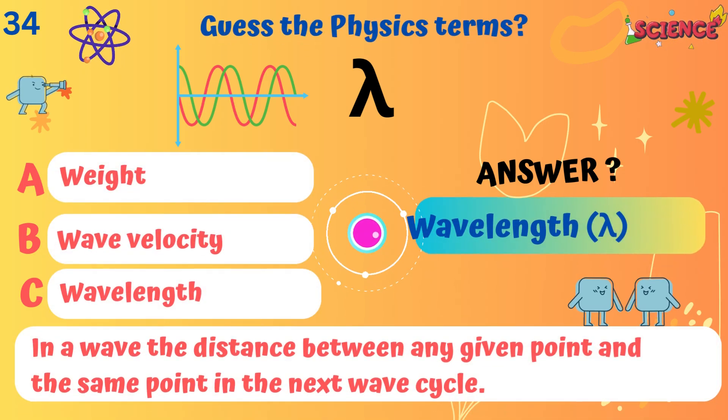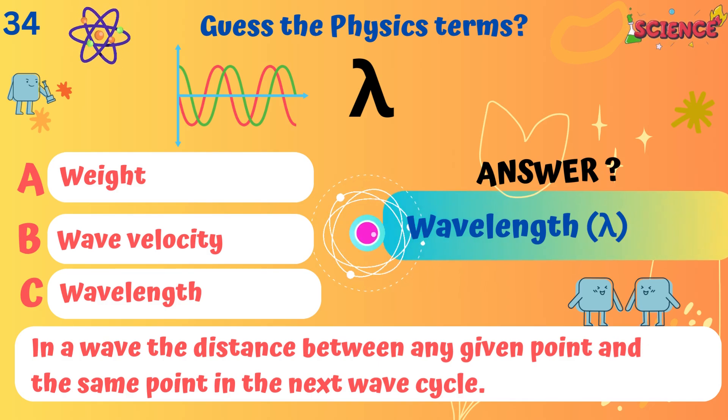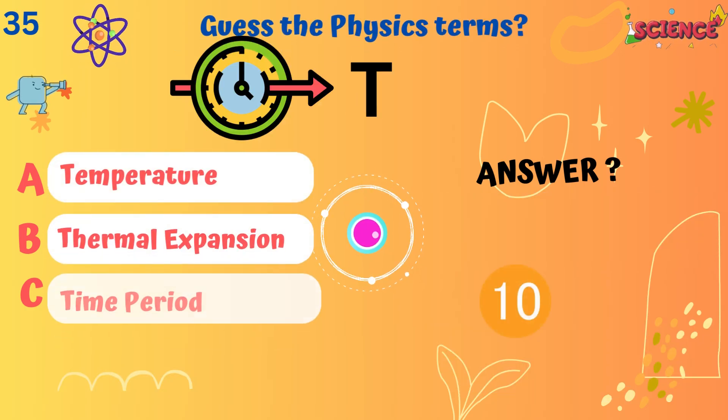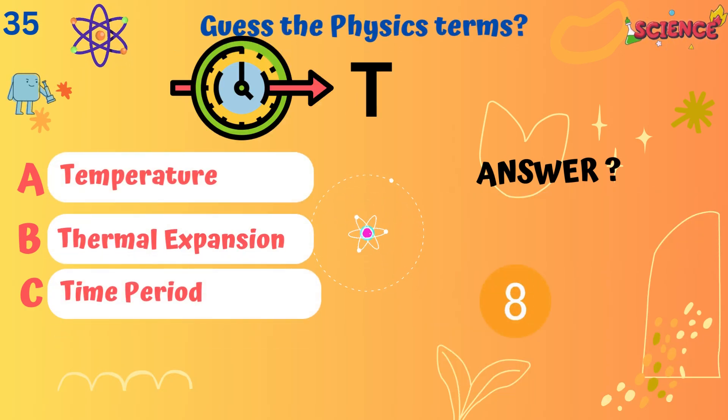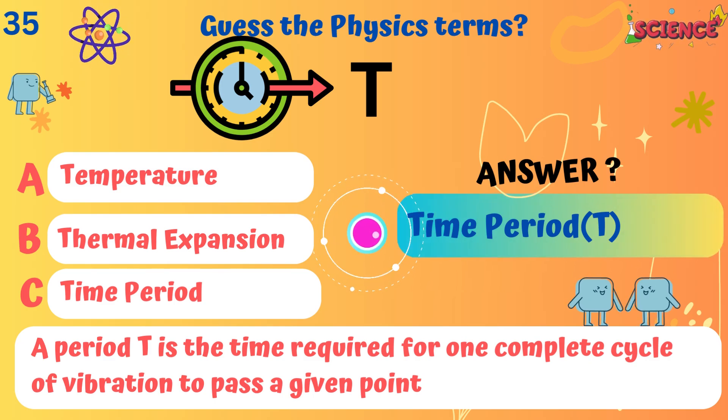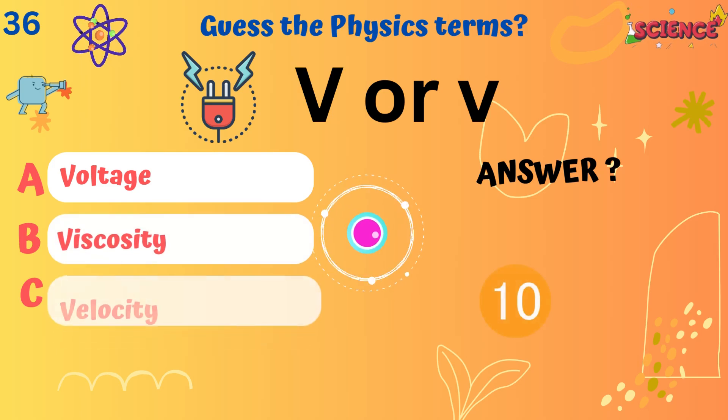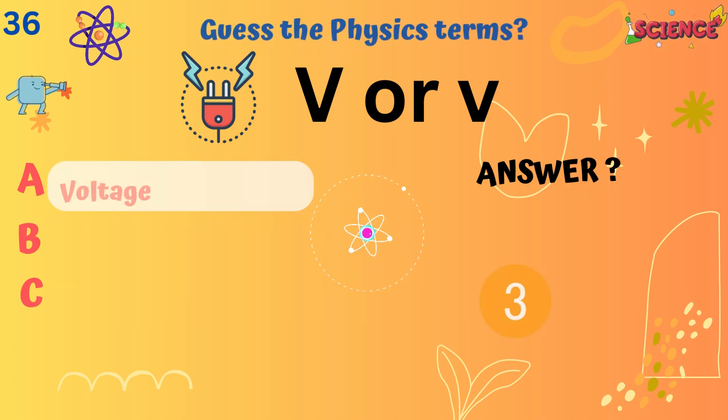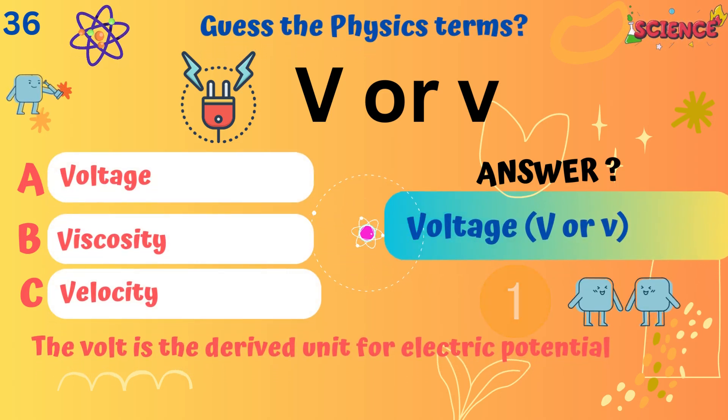Wavelength. In a wave the distance between any given point and the same point in the next wave cycle. Time period.